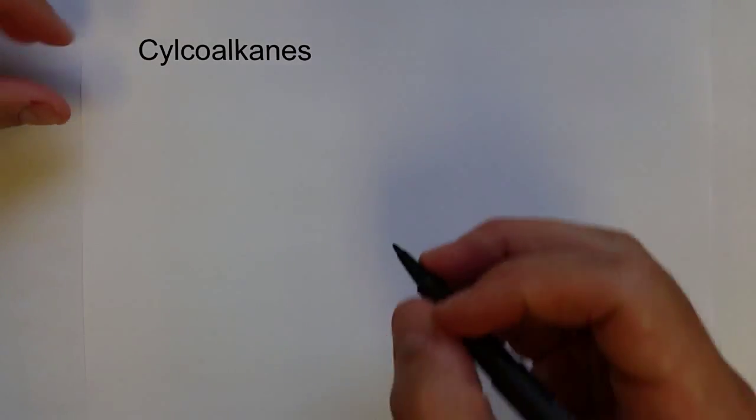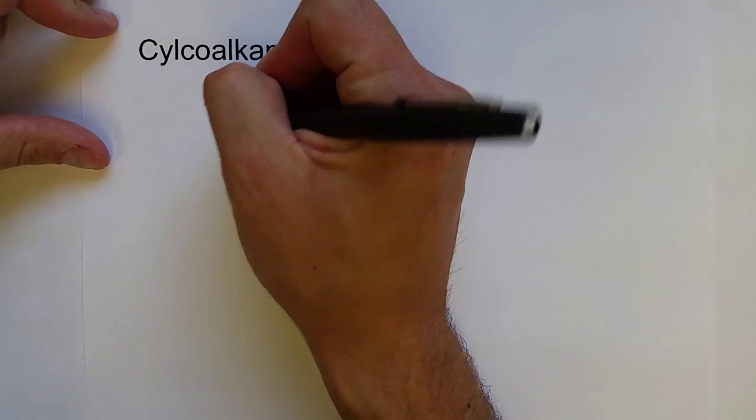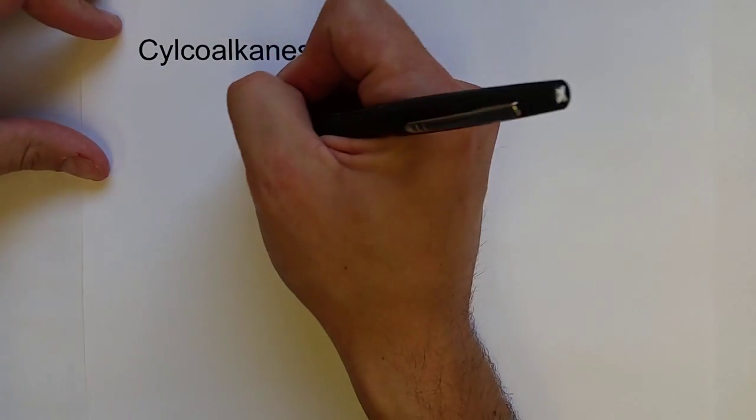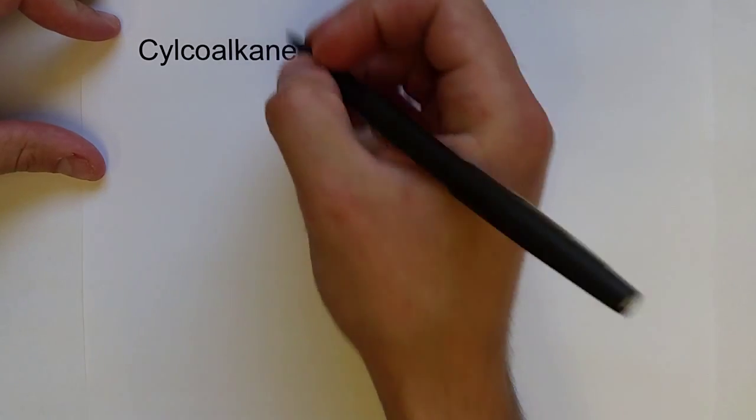Alright, so it turns out that in addition to being branched, alkanes can also form cyclic structures, where the carbons form a circle or a different shape where they come back and meet on each other.